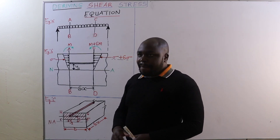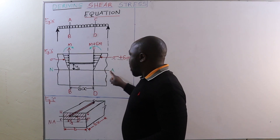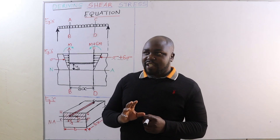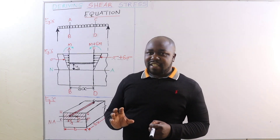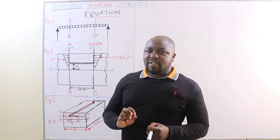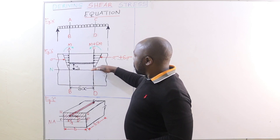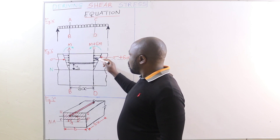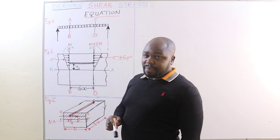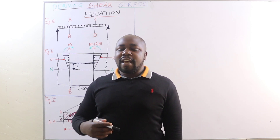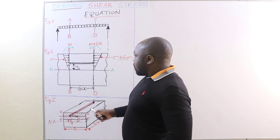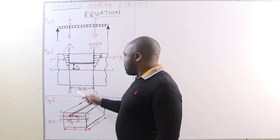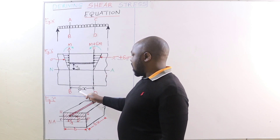At the neutral axis, the bending stress is zero — that is why it is known as the neutral axis. No stress acts at the neutral axis. But above the neutral axis, the bending stress increases from zero to the maximum at the top of the beam. The distance between section AB and section CD is delta X.